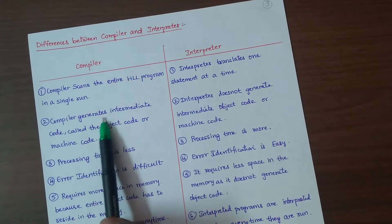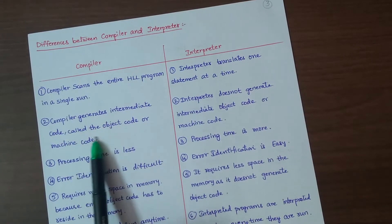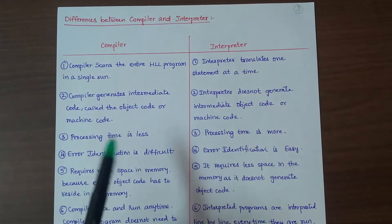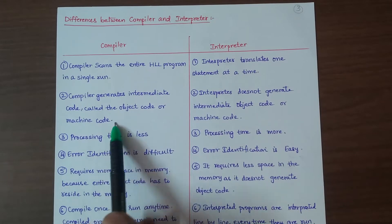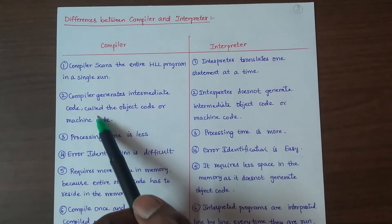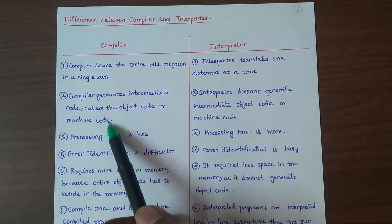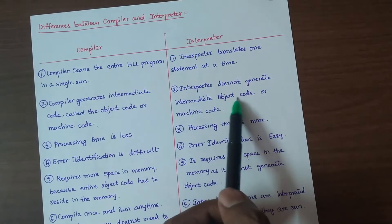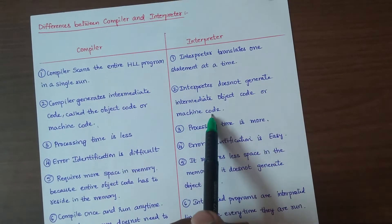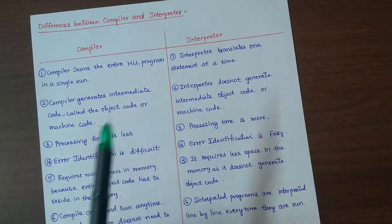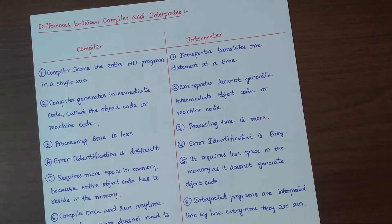Point 2: The compiler generates intermediate code called object code or machine code, and converts it to a .exe target program. The interpreter does not generate any intermediate object code or machine code; it converts code directly without producing a separate target program.